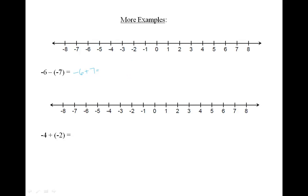Put your dot on the minus six and move seven spaces to the right — one, two, three, four, five, six, seven. Your final answer will be one.